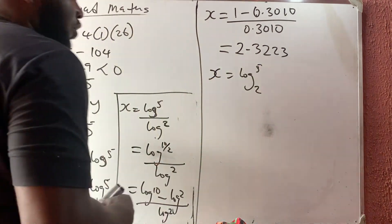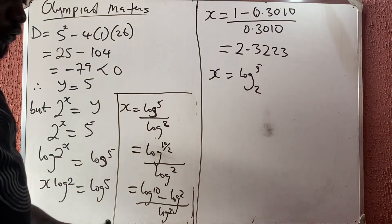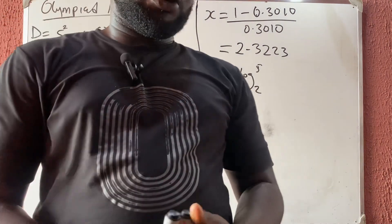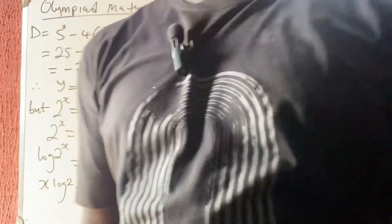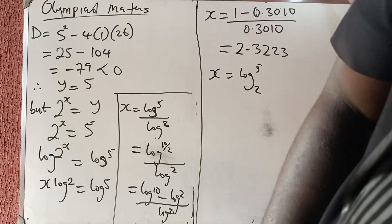So the final answer is x = log 5 base 2, or approximately 2.322 — either form is acceptable. Thank you very much for watching this video, please don't forget to like, share, and subscribe. Bye bye!